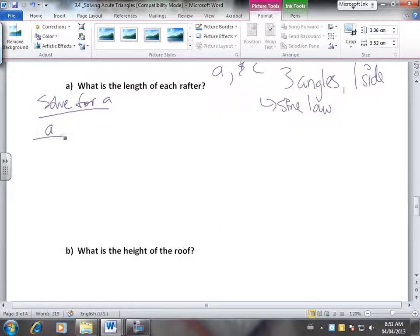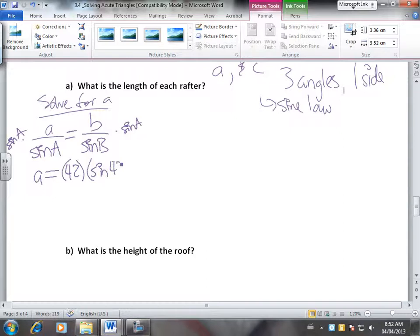So we're going to go, I'll write out the formula first. A over sine A, and then because we have length B, we're going to use B over sine B. To get A by itself, we're going to have, so B is 42, because we know that length. We're going to multiply both sides by sine A. Then we'll have sine 48 over sine 88. And we'll get that A equals 31.2 feet.